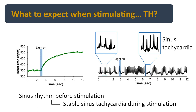For TH (sympathetic) stimulation: you start with stable sinus rhythm. Once the light is on, the heart rate increase is smooth and exponential — not sudden. You still see a P wave followed by QRS, but with a shorter RR interval, meaning increased heart rate: sinus tachycardia, potentially reaching 400–500 bpm depending on the heart that day. The exact response varies, but you will always expect to see an increase in heart rate.